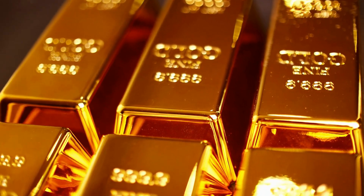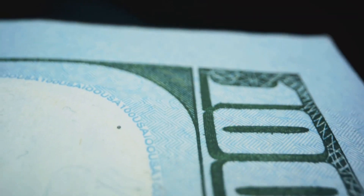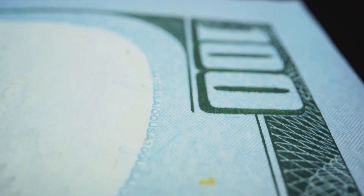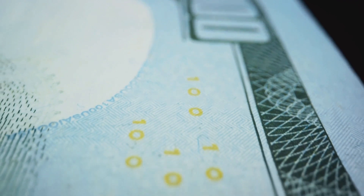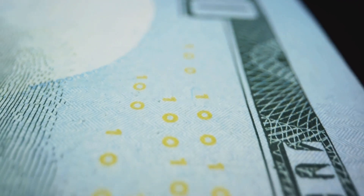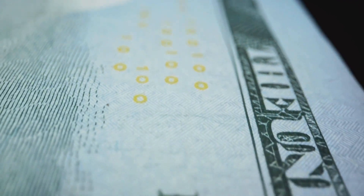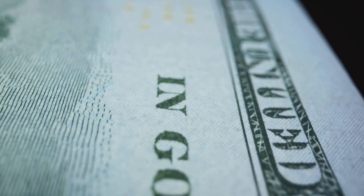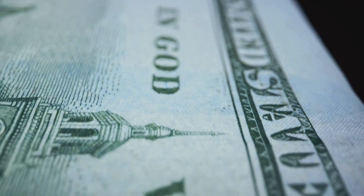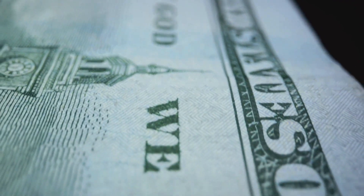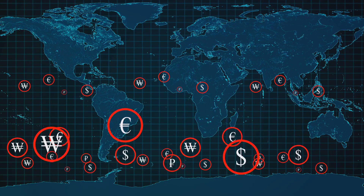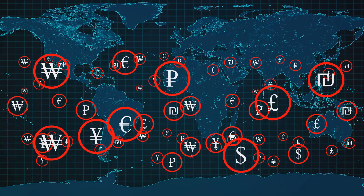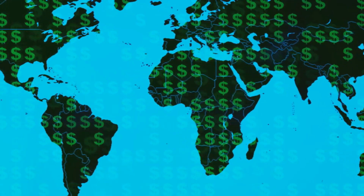Yet as we all know, this system didn't last. Why? The answer lies in the gold standard. The US found it increasingly difficult to maintain the gold standard, as the value of the dollar was constantly under pressure from the country's persistent balance of payments deficit. The strain was too great, and in 1971, the Bretton Woods system was suspended.